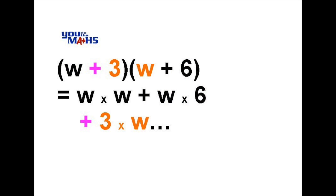The next thing to do is to add the 3 multiplied by the W. So that's the inner part of the two brackets. And then the last part of the two brackets, we've got a positive 3 and a positive 6, so we're adding 3 multiplied by 6.